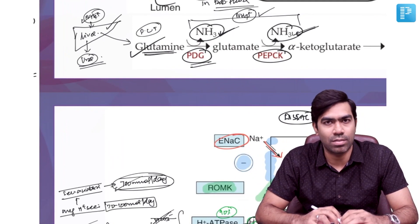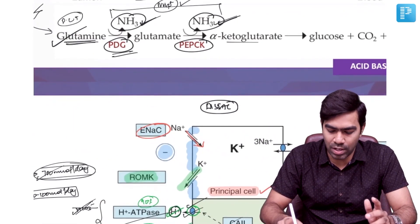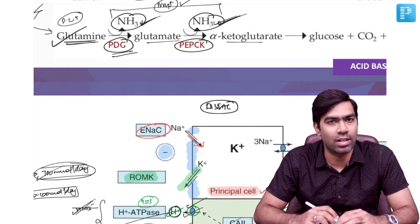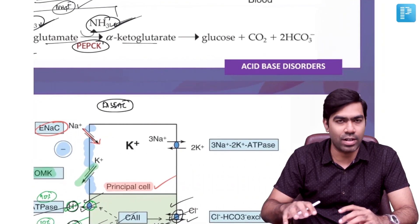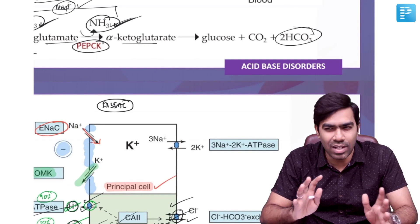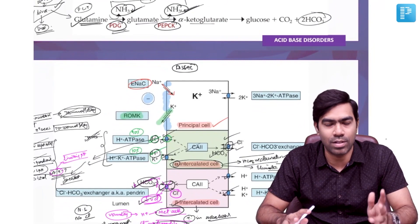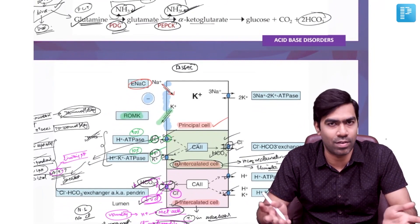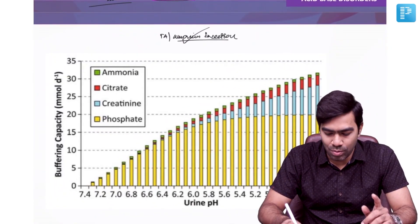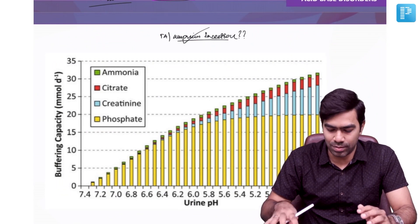Two enzymes are important: first, glutamine to glutamate via phosphate-dependent glutaminase (PDG), which releases one ammonium molecule; then glutamate to alpha-ketoglutarate by PEPCK, yielding another ammonium molecule. Alpha-ketoglutarate may further be converted to two bicarbonate molecules in the liver, though this is somewhat controversial. So two molecules of ammonium are produced per glutamine metabolized in proximal convoluted tubular cells.